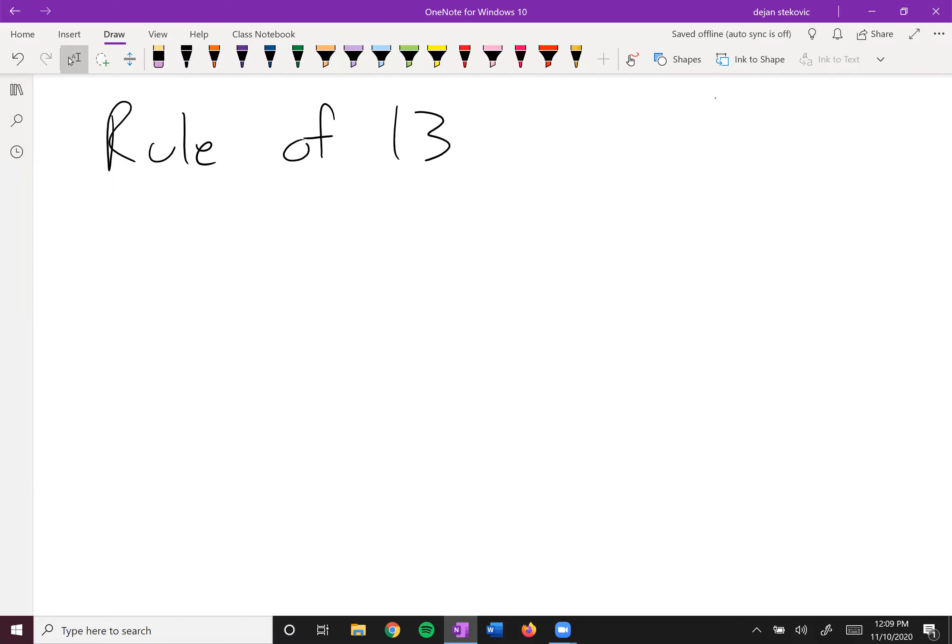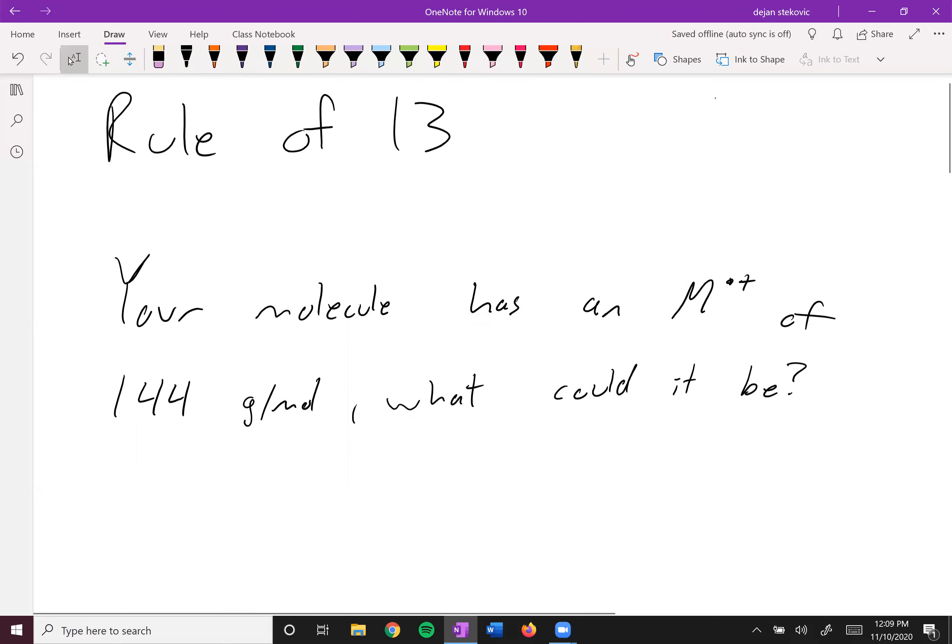All right. So remember that the whole purpose of all of this is to identify the formula and structure of our compound. And a good place to start is the molecular mass of a compound. For example, let's just say you take a look at your mass spec and you find out that your molecule has a molecular ion peak of 144 grams per mole. You want to think about some options of what could it be. And so this is where the rule of 13 comes in handy.